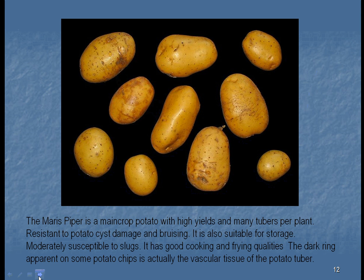Here's another type of potato — the Maris Piper potato — which is resistant to other organisms such as the potato cyst. When harvesting potatoes, they're usually done by machine nowadays because it's too expensive to do by hand. Machines can bruise some of the potatoes, so you have to develop varieties with thicker skins. The Maris Piper was one such variety. It also has good cooking and frying capabilities, and we make a lot of potato chips from it.